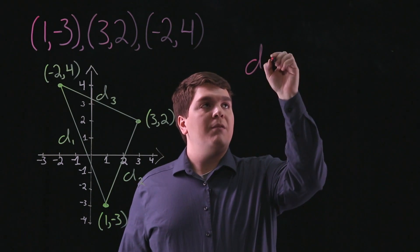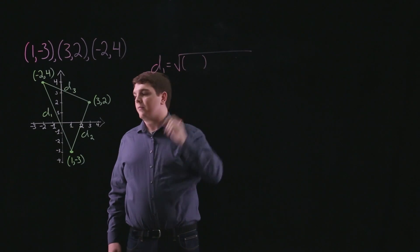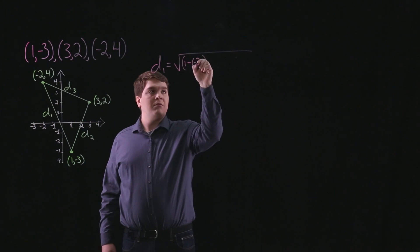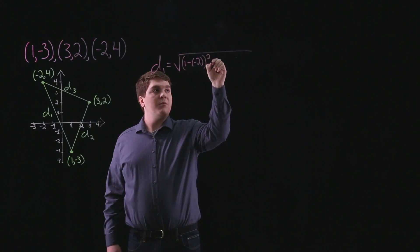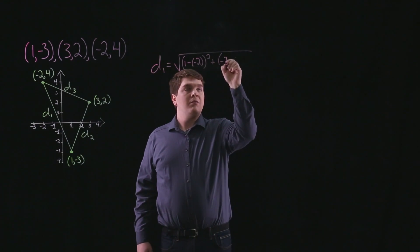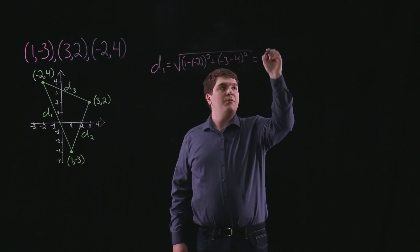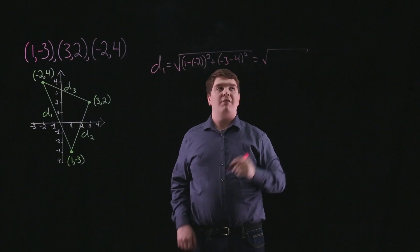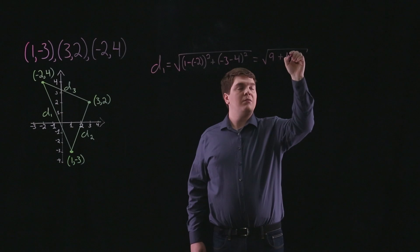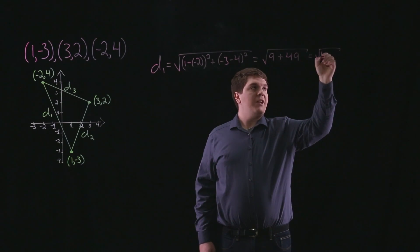So the length of d1 is equal to the square root of (1 minus negative 2) quantity squared plus (negative 3 minus 4) quantity squared, which is equal to the square root of 9 plus 49, which is equal to the square root of 58.